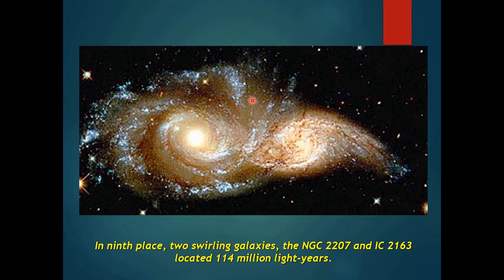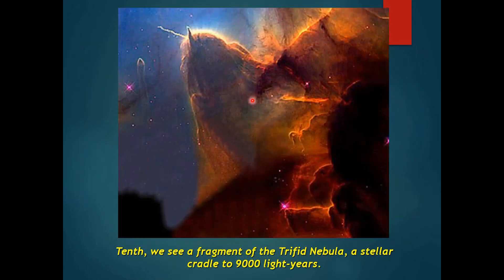At ninth place is a very good image of two galaxies swirling around each other, 115 million light years away — you can just imagine the accuracy of the Hubble telescope and how far it has captured images. Next is the Trifid Nebula.